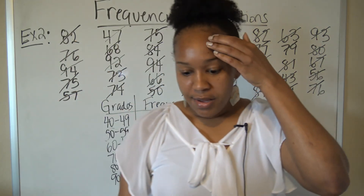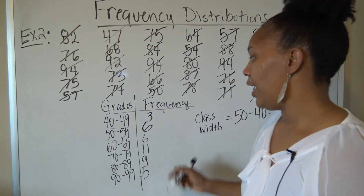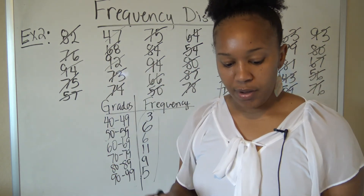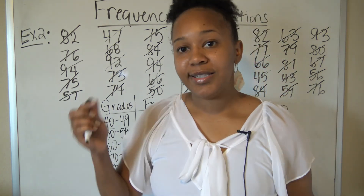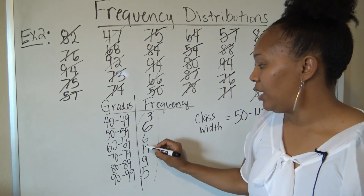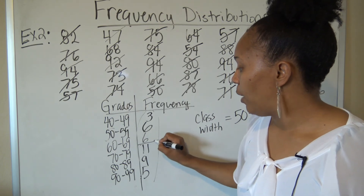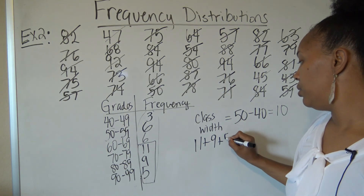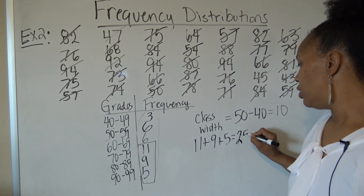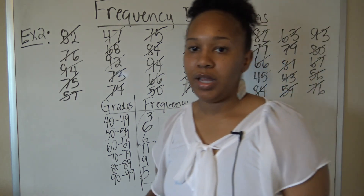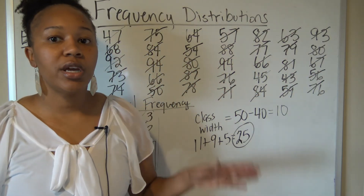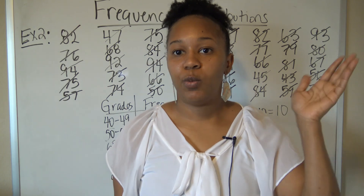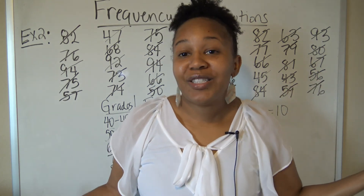To find how many students were in the class, you add all the frequencies — we already verified that gives 40. To find how many passed with at least a 70, you include the 70–79, 80–89, and 90–99 categories: 11 + 9 = 20, plus 5 = 25. So 25 students passed with at least a 70. That's how you look at your frequency distribution and answer questions about it.